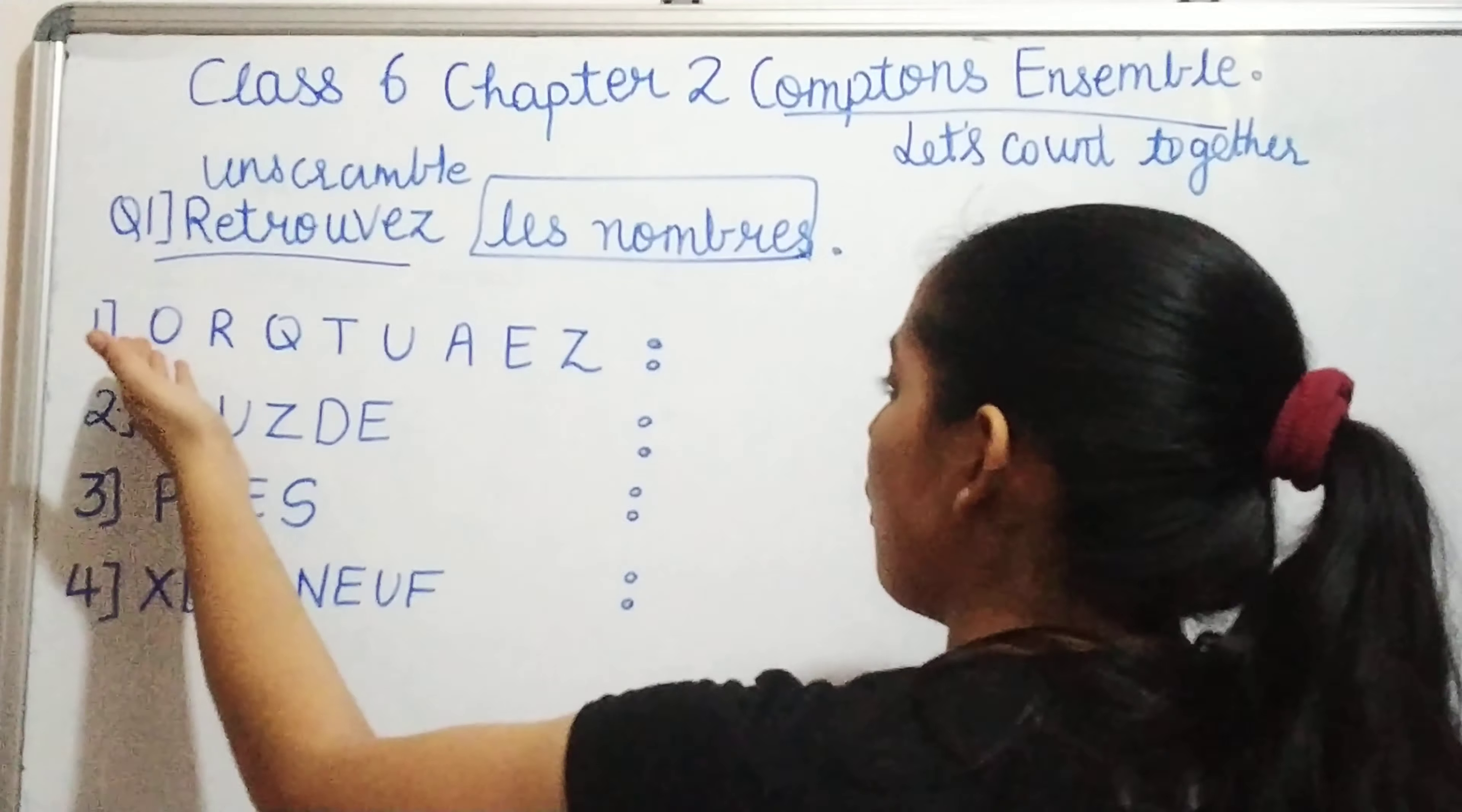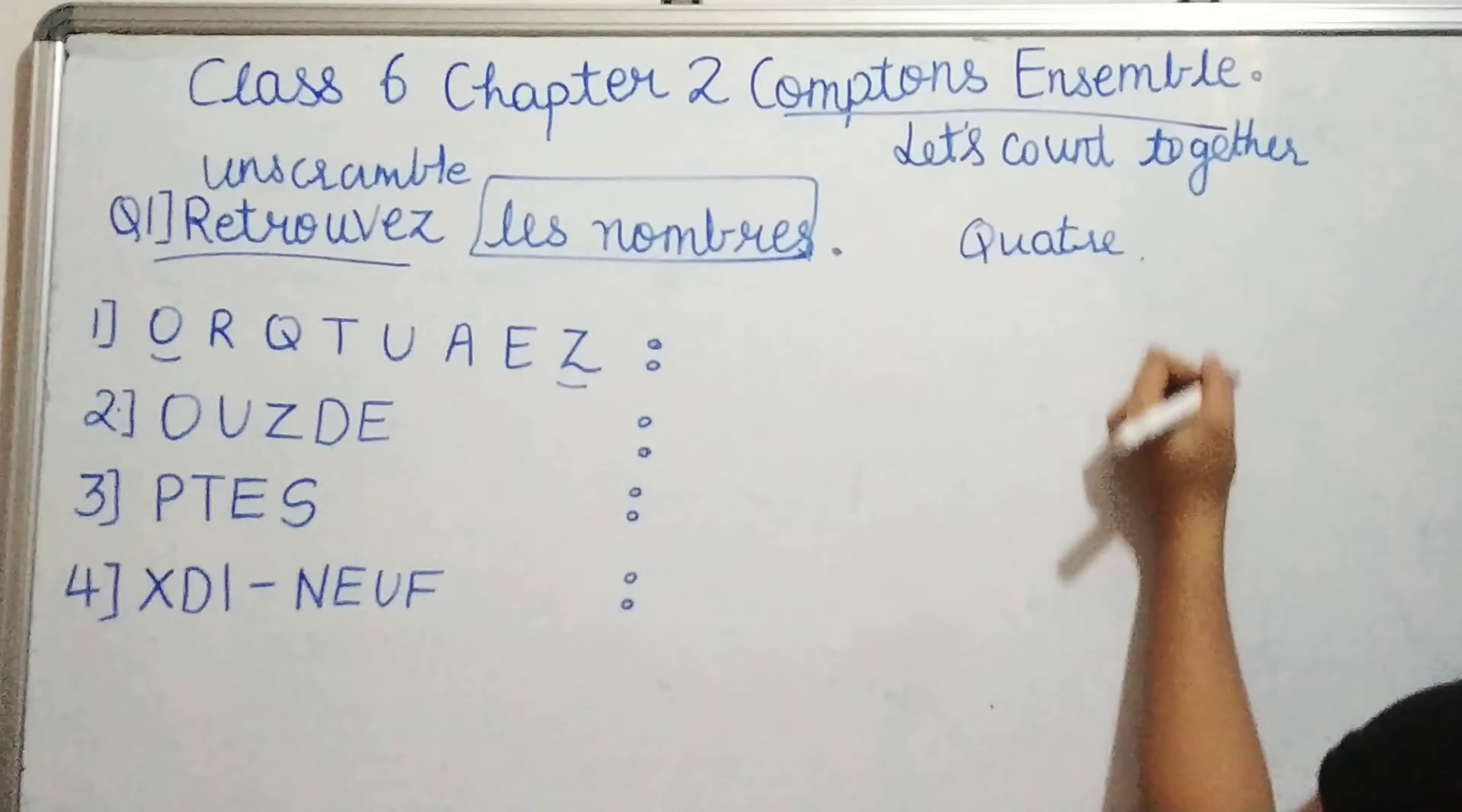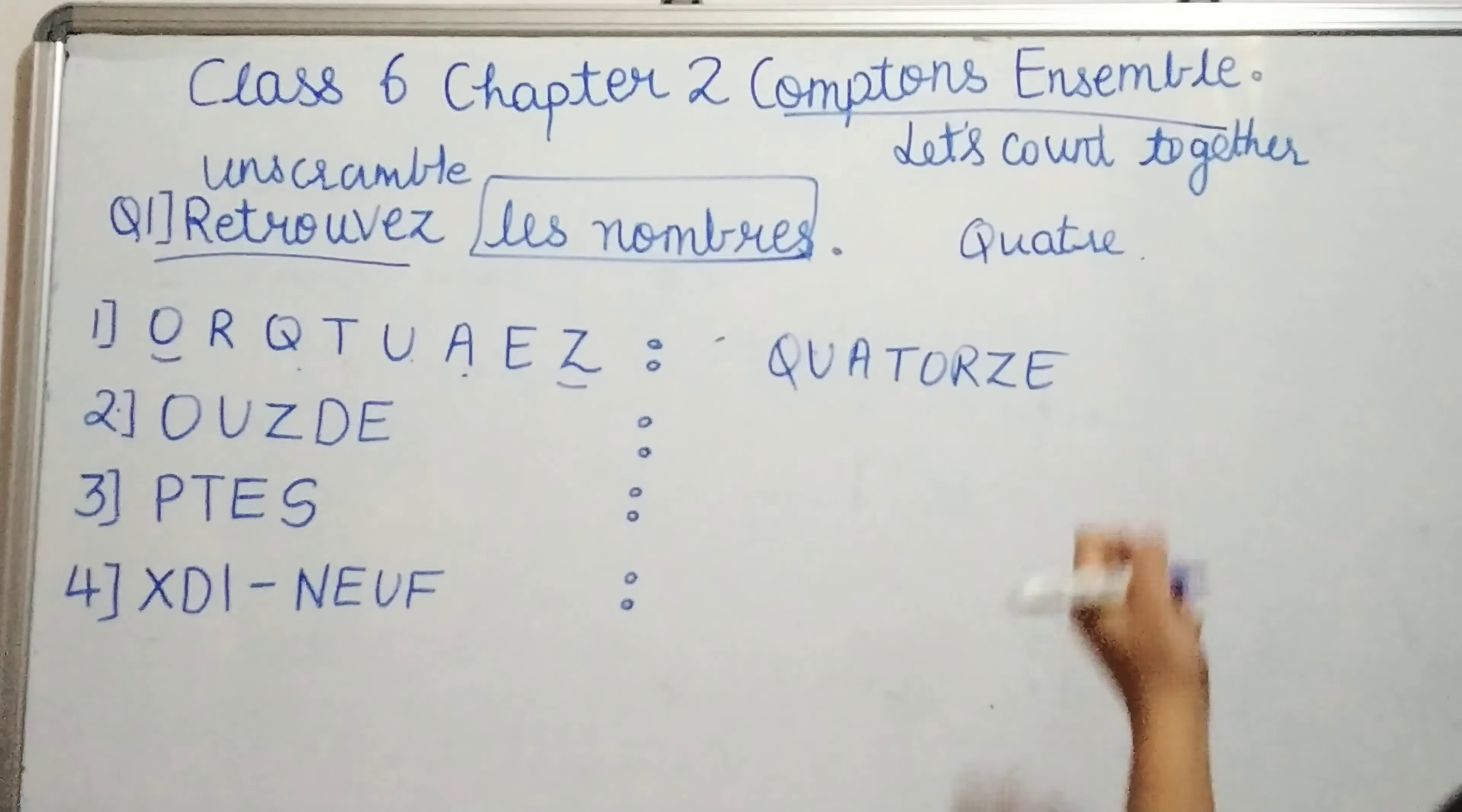So you have the first question, that is O, R, U, T, U, A, E, Z. From here, you can see that this is somewhat similar to four, right? Quatre. You have Q, A, Q, U, A, T, R, E. But there are two, three more letters. So if you think of one more plus it, we can say that it could be 14. Let's check: Q, U, A, T, O, R, Z, E. Well, it's 14. So let's write it. Q, U, A, T, O, R, Z, E. This would be your spelling, that is quatorze, which means 14.